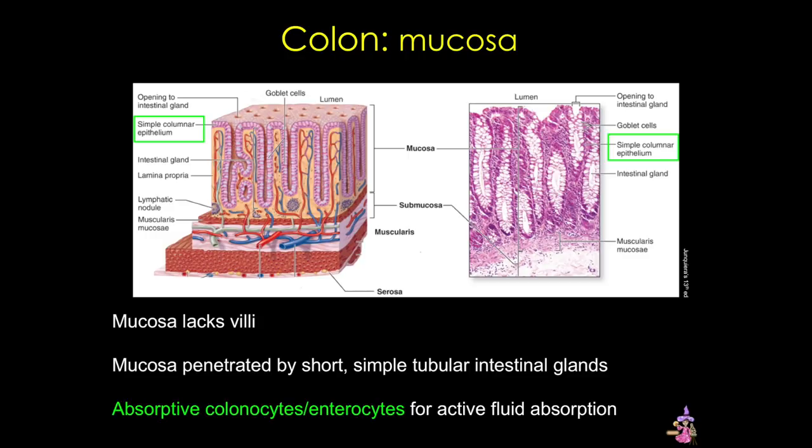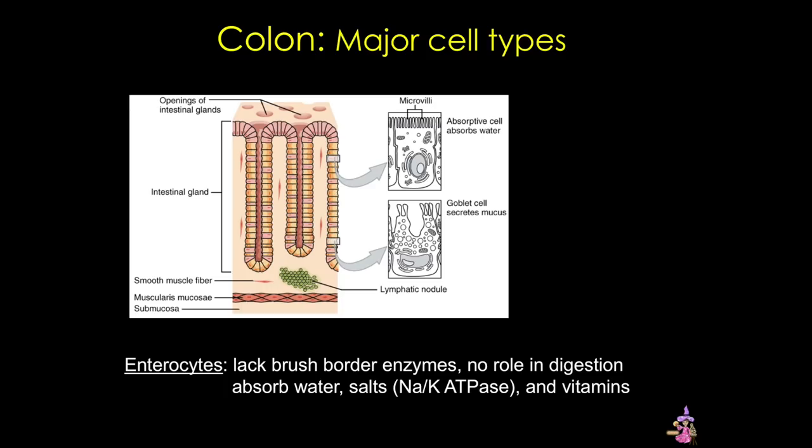Now let's take a closer look at the mucosa. The mucosa contains simple columnar epithelium with absorptive colonocytes, or enterocytes, for active fluid absorption, as well as goblet cells. The enterocytes have short apical microvilli, and the cells participate in the transport of ions and water.